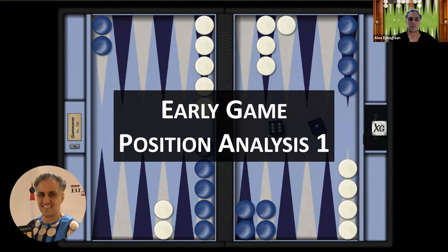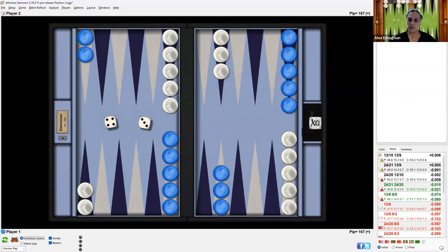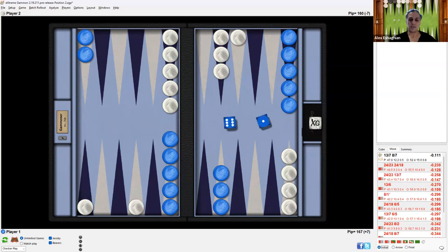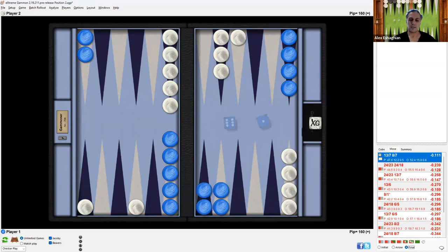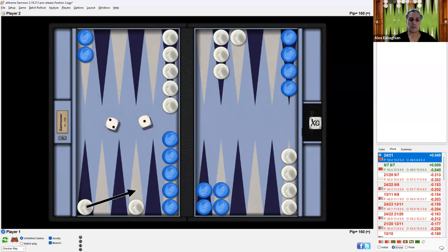So this is a position from an early game. This was the opening position and white rolled a 4-3 and played like this, resulting in this position. Then blue rolled a 6-1, playing like this, resulting in this position. And then white rolled a 2-1, moving the back checker up, resulting in this position, making the anchor.